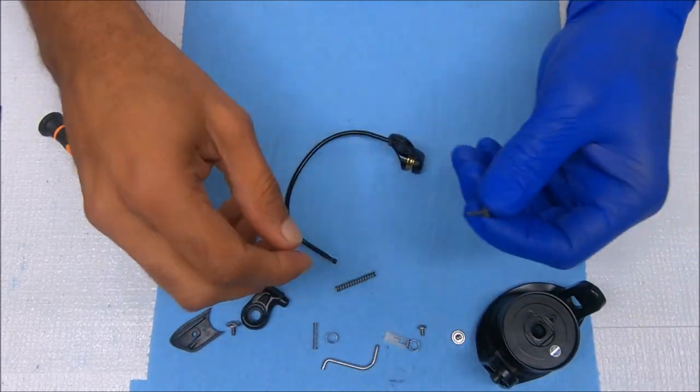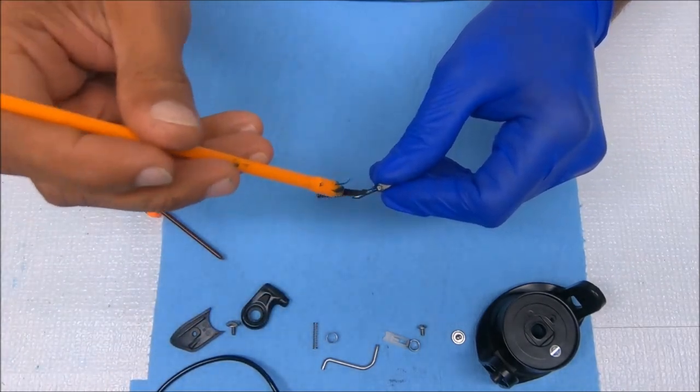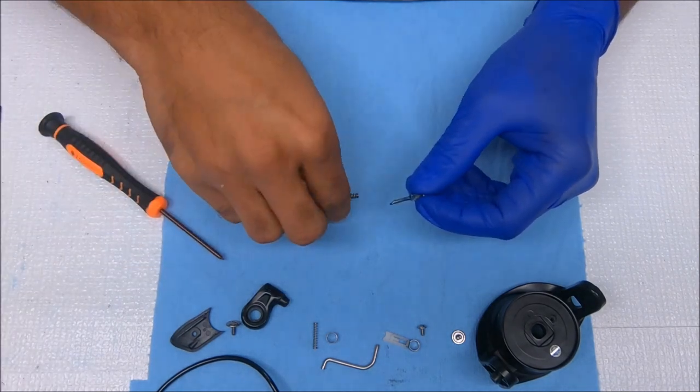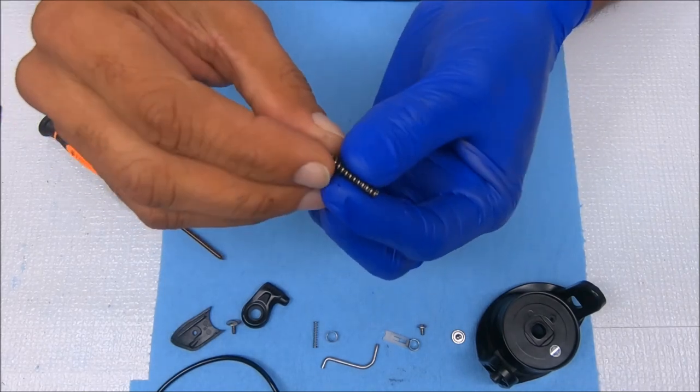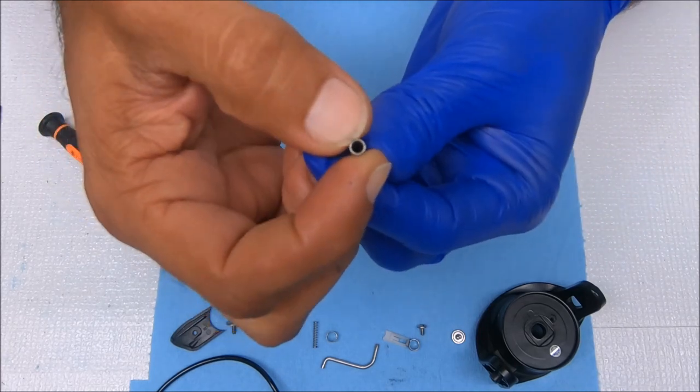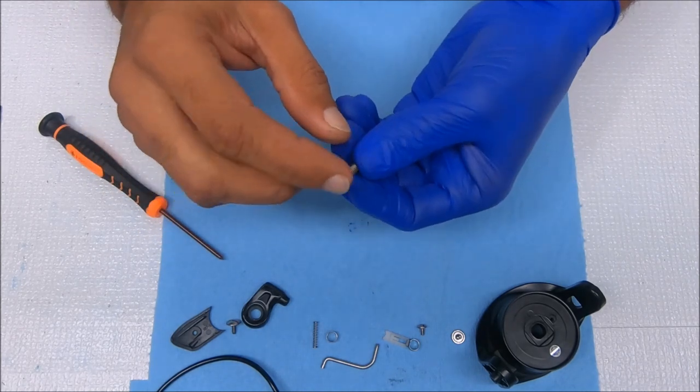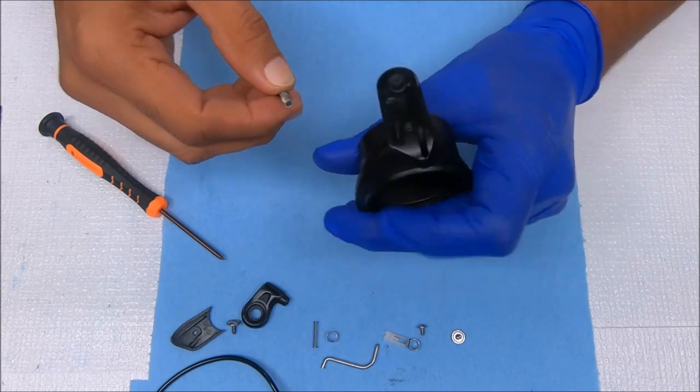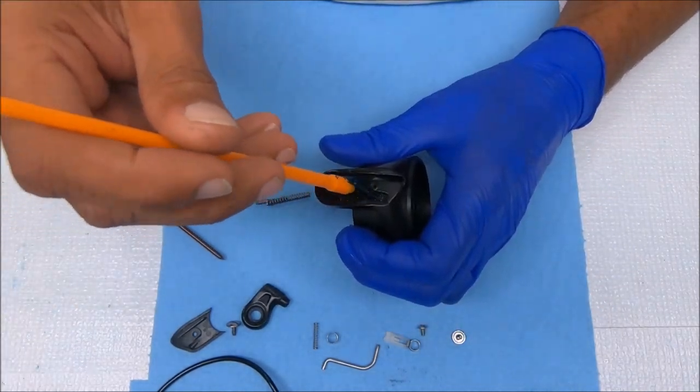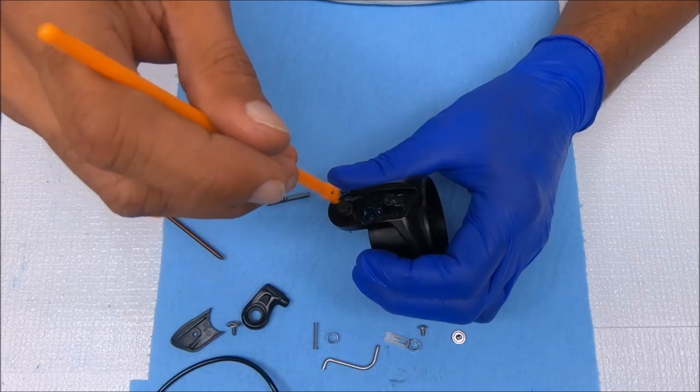Now we'll take our bail spring and add a little bit of grease here. For the bail spring, there's a smaller end. The larger end will go over this and the smaller end goes inside the slot right here. Add some grease here also.